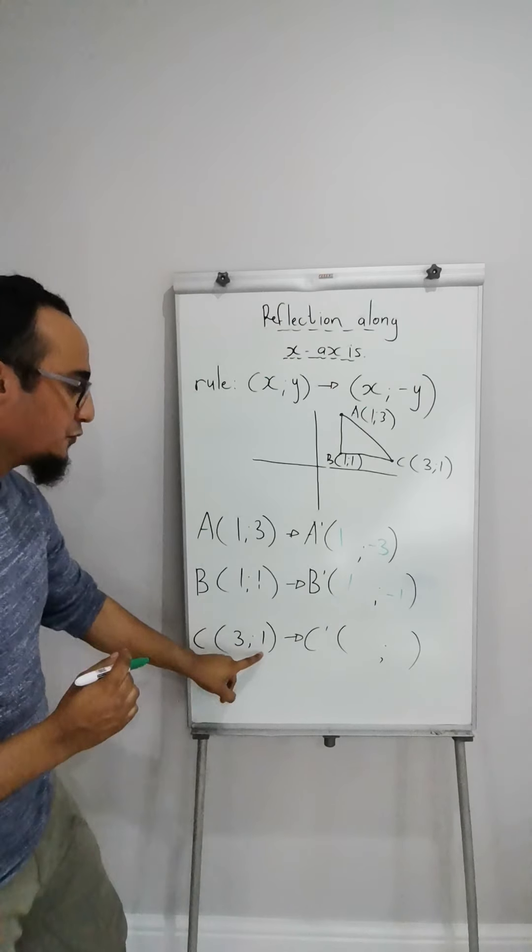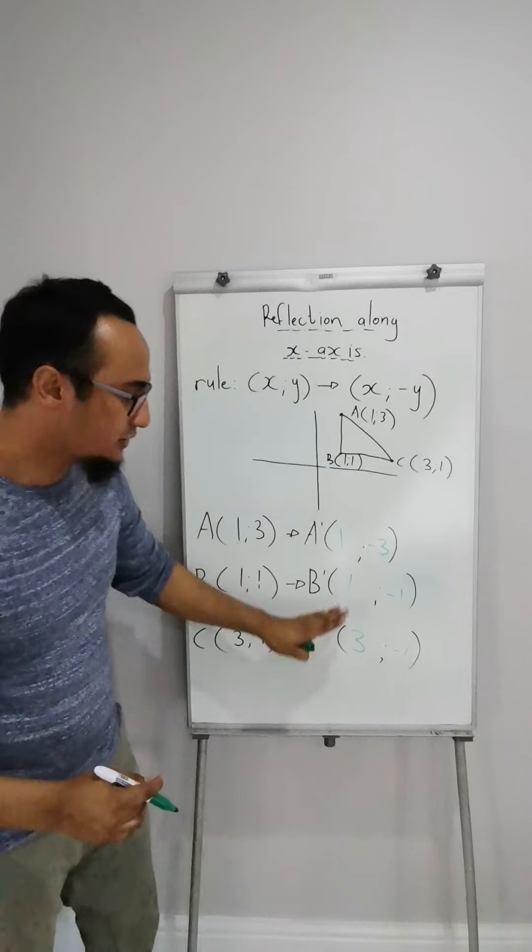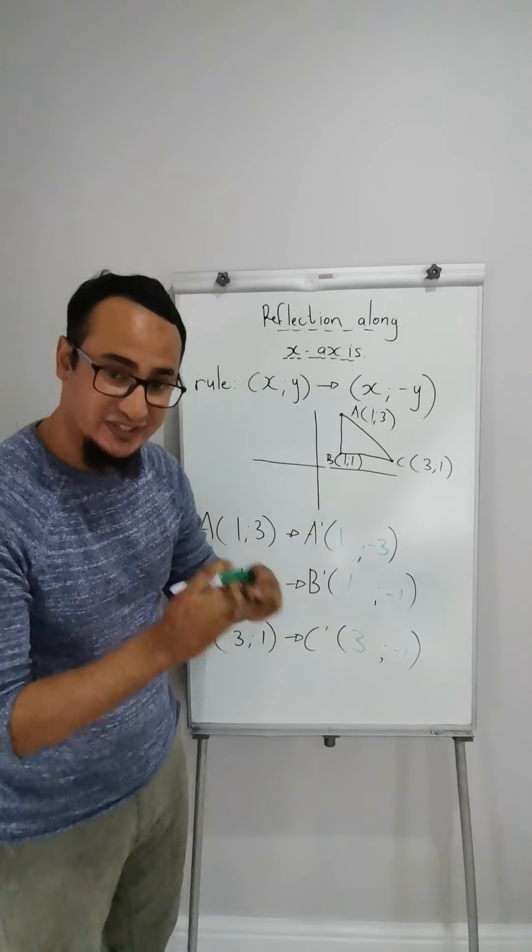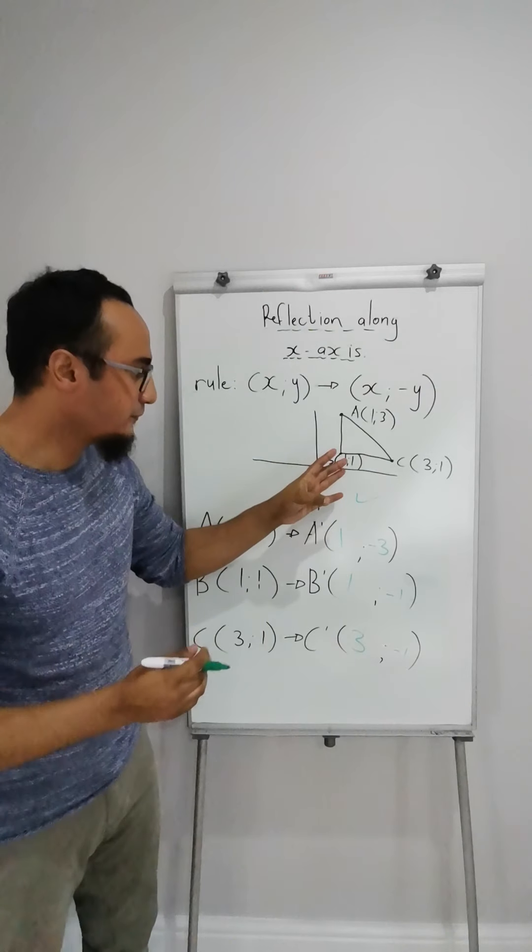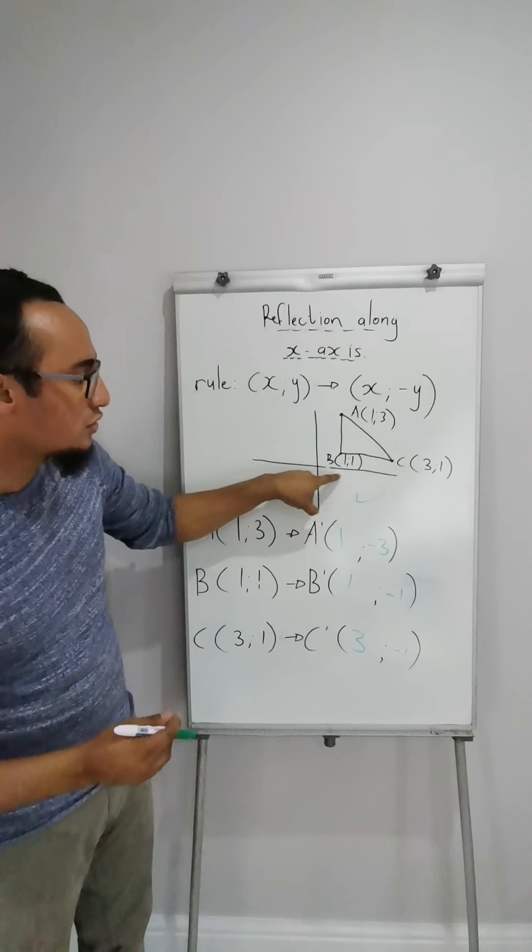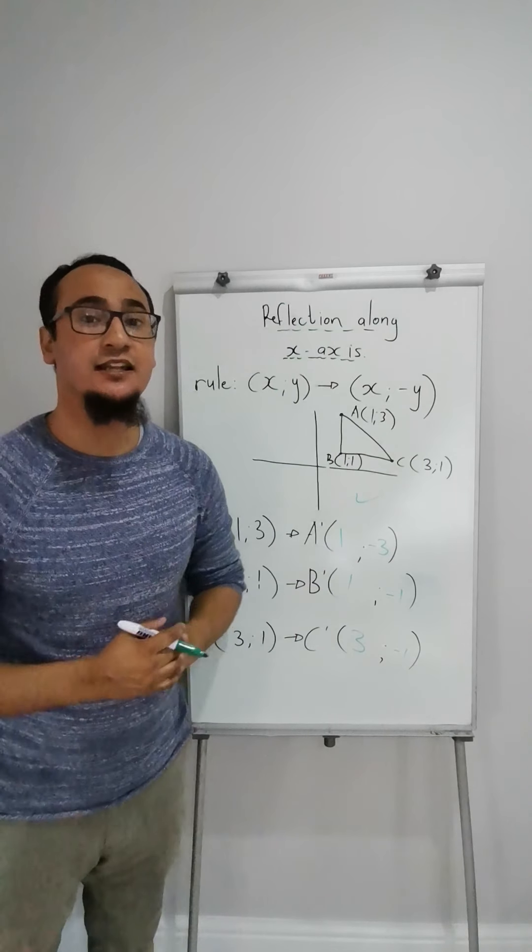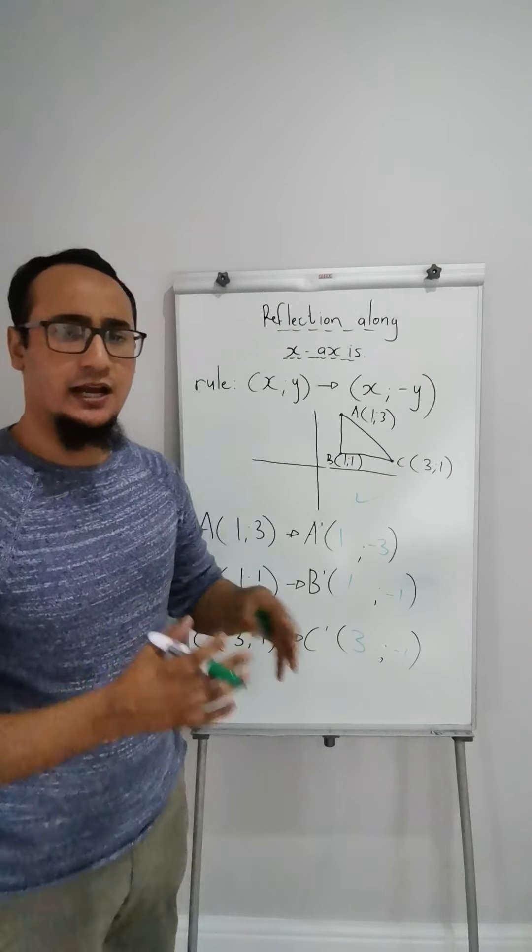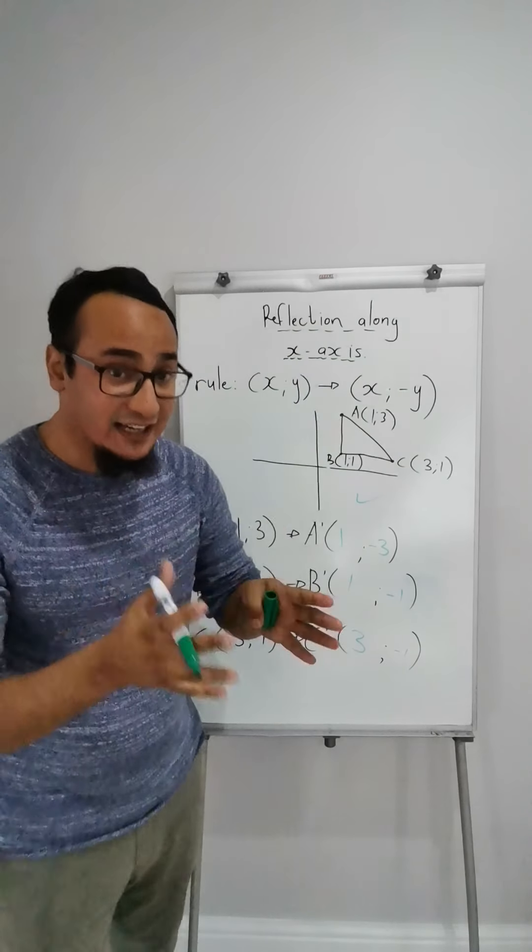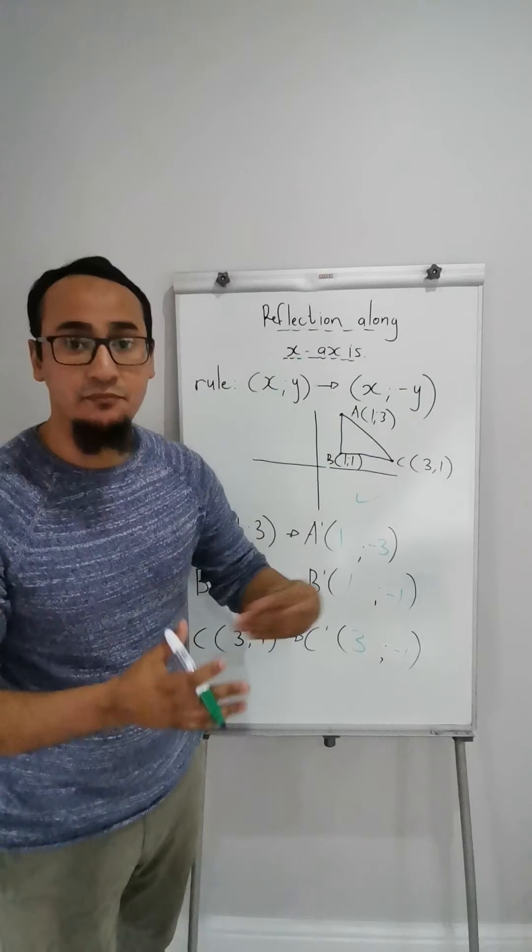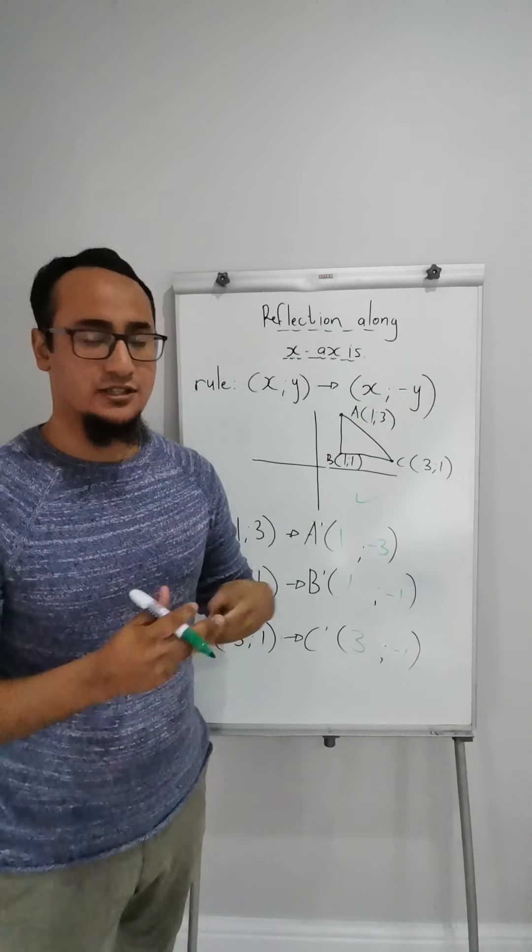If I have 1 and 1 over here, the x-value changes to a negative and the y-value stays the same because I'm basically reflecting along this y-axis over here. So 3 and 1, what changes? Negative 3 changes and that stays the value of 1. Once you draw A', B', C', you'll find that your diagram will be more or less over there.